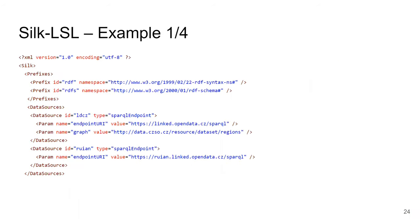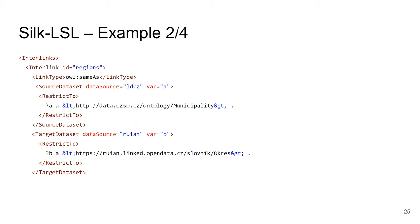In today's tutorial, we will recreate a working linking task in the SILK workbench UI, so you can learn how to use SILK with your own datasets. The complete configuration is an XML file with silk as the root element, containing prefixes, data sources — in this case two SPARQL endpoints, one accessed via a single named graph — and a linking task connecting regions from one style in the first endpoint to regions in another style in the second endpoint. The link type is owl:sameAs.